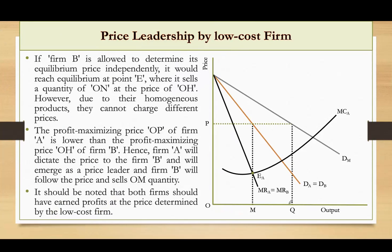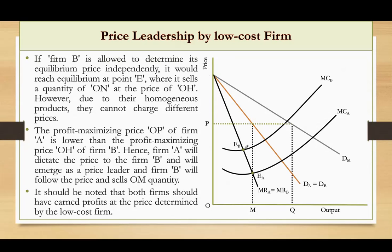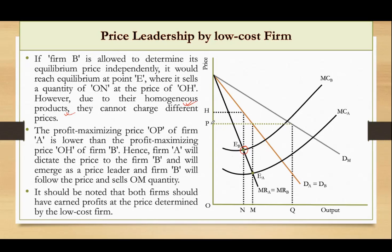If firm B were allowed to determine its equilibrium price independently, it would be in equilibrium at point EB, where OH would be the price and ON would be the quantity demanded. However, due to their homogeneous products, they cannot charge different prices. The profit maximizing price OP of firm A is lower than the profit maximizing price OH of firm B.